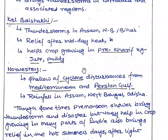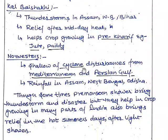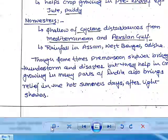Cyclonic disturbances from the Mediterranean and the Pacific Gulf bring rainfall in West Bengal and Odisha. Sometimes these pre-monsoon showers bring thunderstorms and occasional disasters, but they help in crop growing in many parts of India. They also bring rainfall during the hot summers along with other light showers.